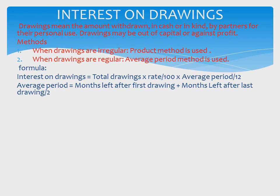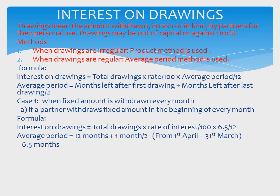We divide by 2 because we are calculating the average period. Now let's start with Case 1: when a fixed amount is withdrawn every month. Case A — if a partner withdraws a fixed amount at the beginning of every month.